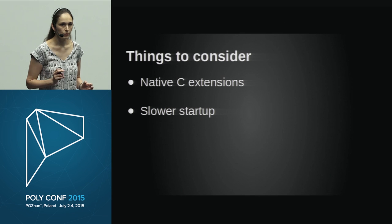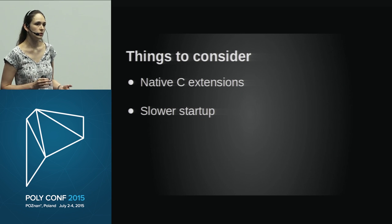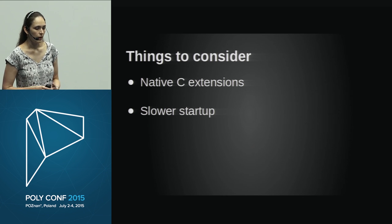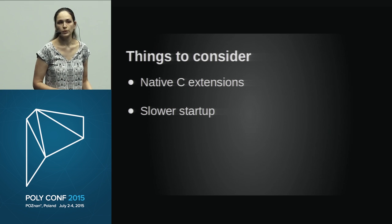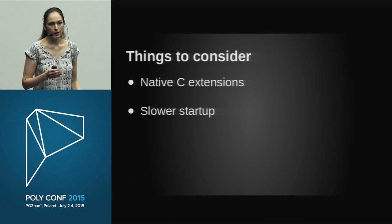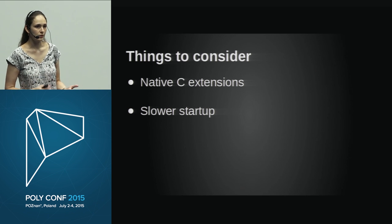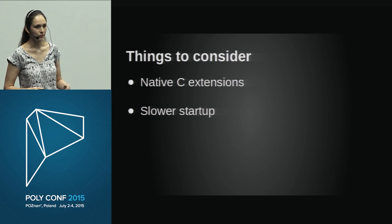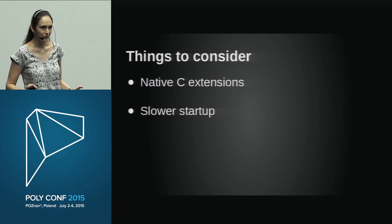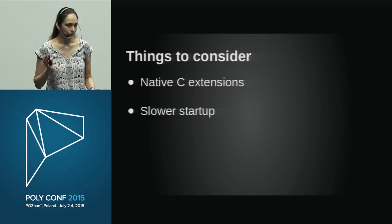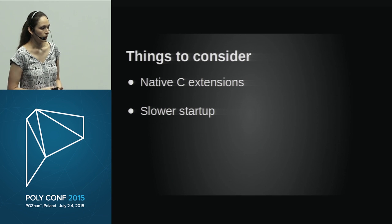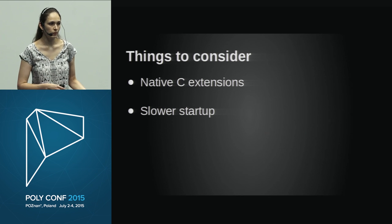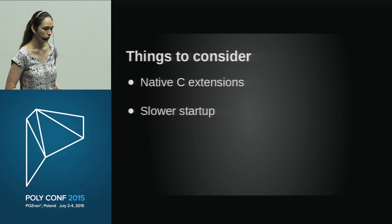There are some things to be aware of when considering JRuby. If your code uses native C extensions, that's not going to work — you'll need to find alternatives, and the good news is there are alternatives for most popular libraries. There's also a price of slower startup. In production that probably won't matter, but in development it can be annoying. My recommendation: work with MRI Ruby in development, then switch to JRuby for production to close that gap.